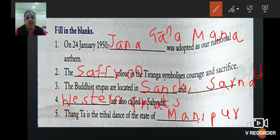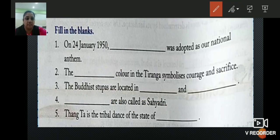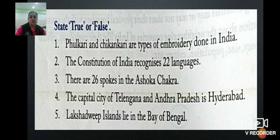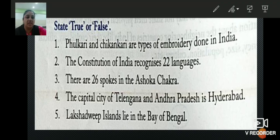You have to write these questions and answers in the notebook. The next question is state true or false. The first one: phulkari and chikankari are types of embroidery done in India. Is it true or false? It is true, so we will write T.